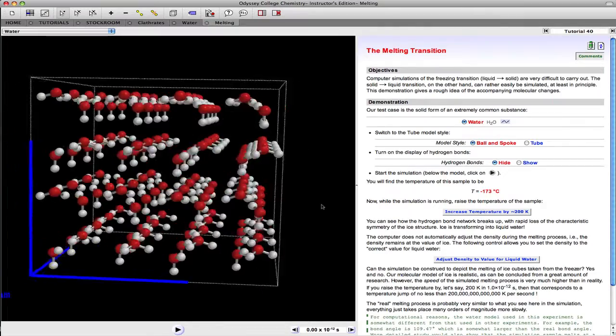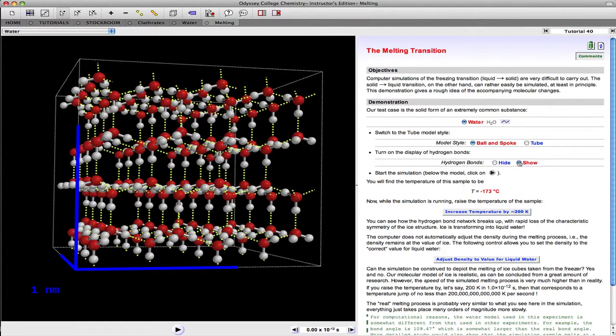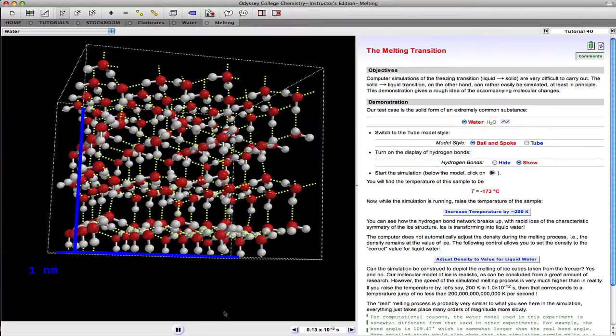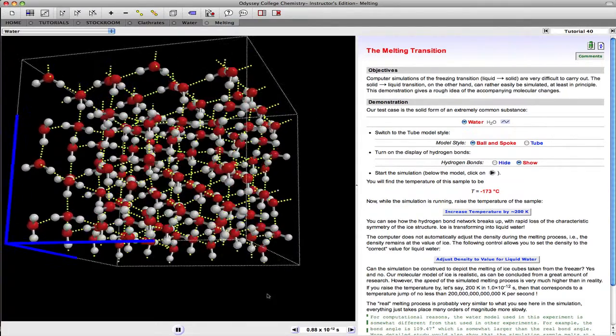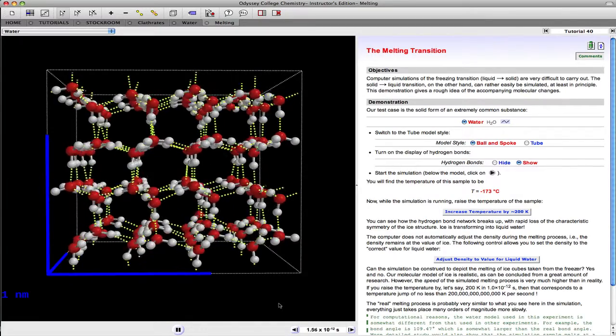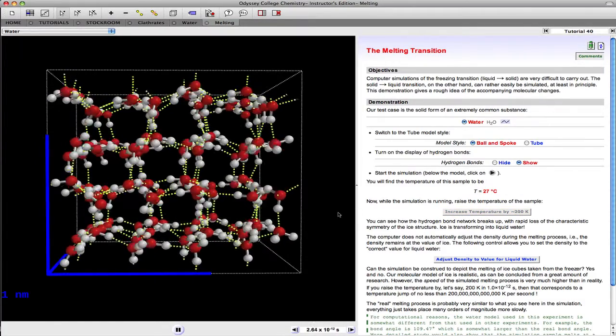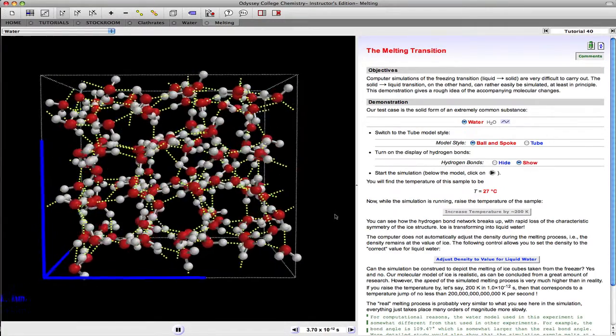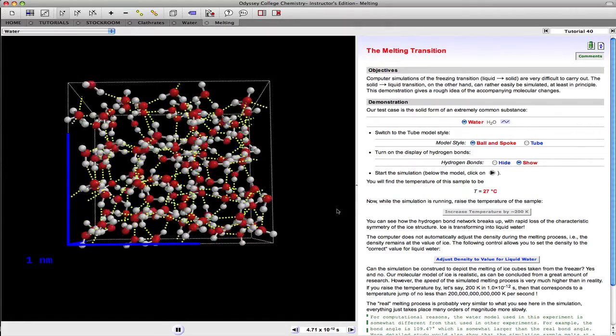So in Odyssey we go to tutorial 40. And we've got a simulation here of a bunch of water molecules in a solid state. And we can follow the instructions over here and turn on the hydrogen bonds. Start the simulation and have a feel for water molecules vibrating in the solid state. Then we can increase the temperature by 200 degrees Kelvin and watch what happens.